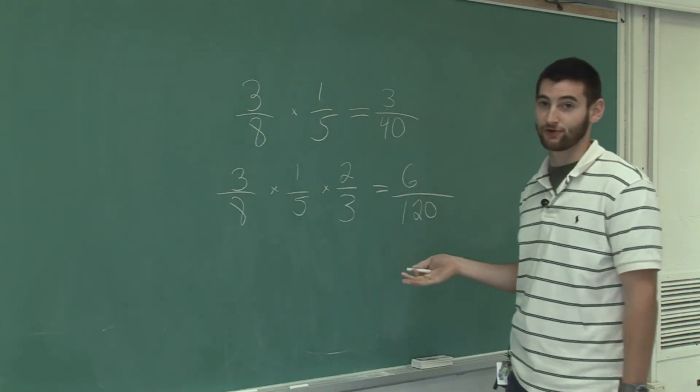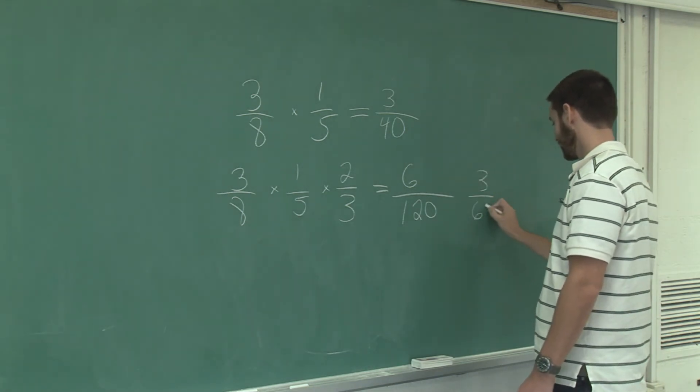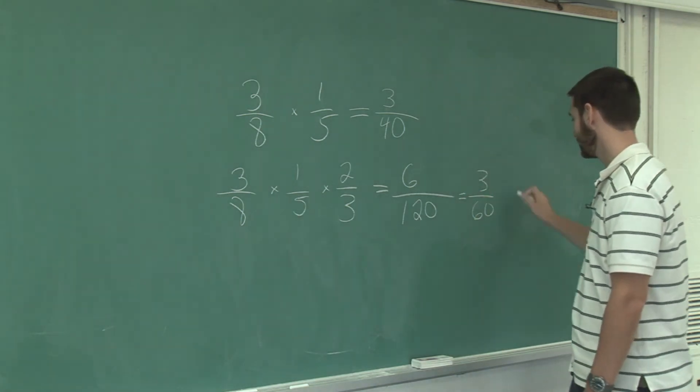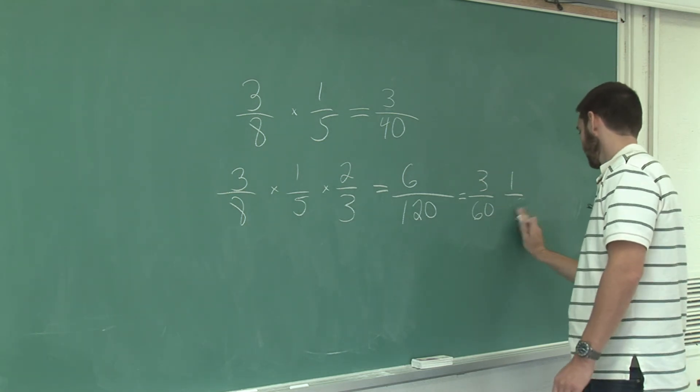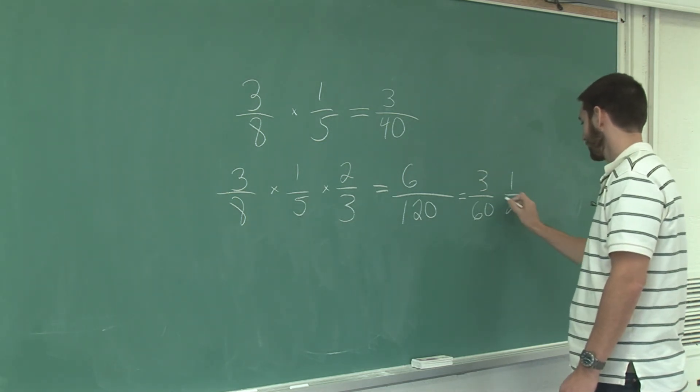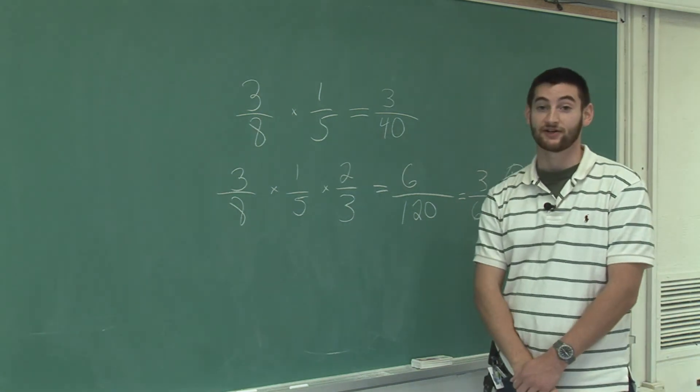This can be further reduced to three over sixty, which is equal to one over twenty. And that is how you multiply three fractions together.